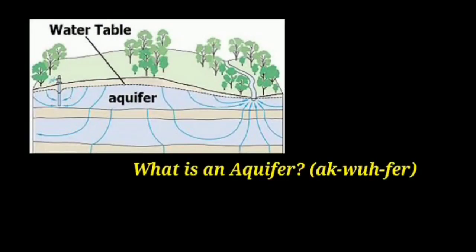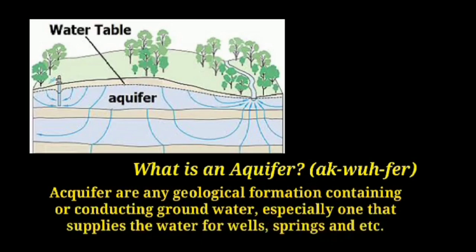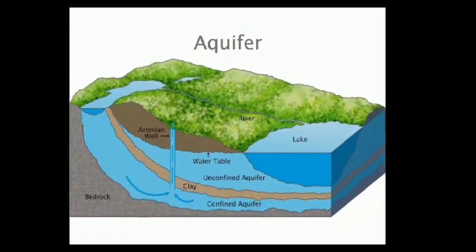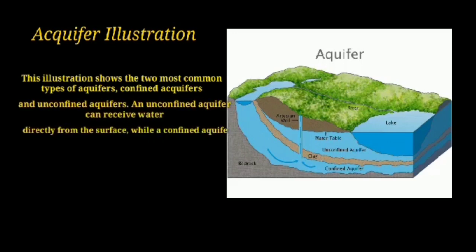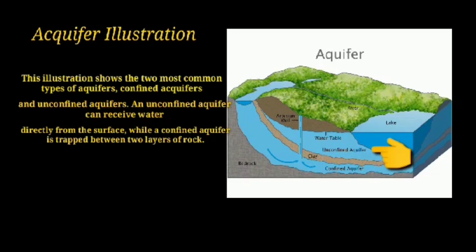An aquifer is any vertical formation containing or conducting groundwater, especially one that supplies water for wells, springs, and similar sources. There are two most common types of aquifers: confined and unconfined. An unconfined aquifer can receive water directly from the surface, while a confined aquifer is trapped between two layers of rock.